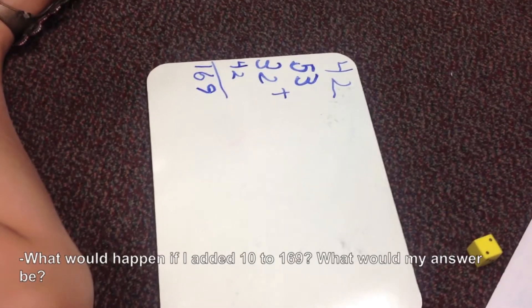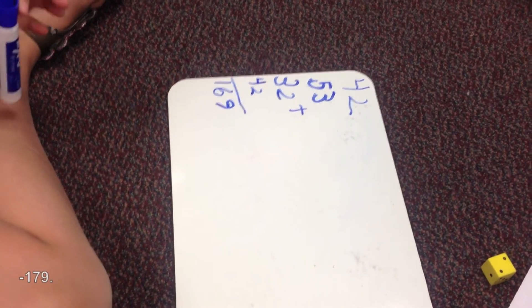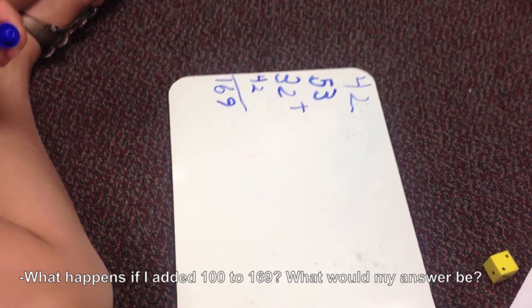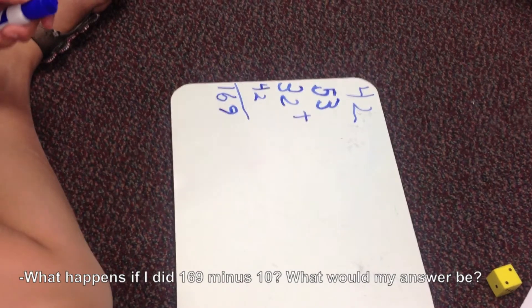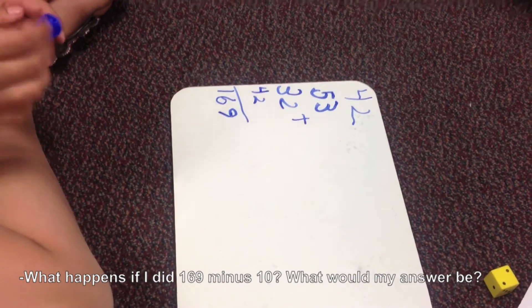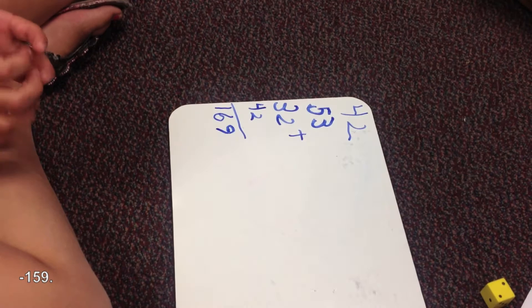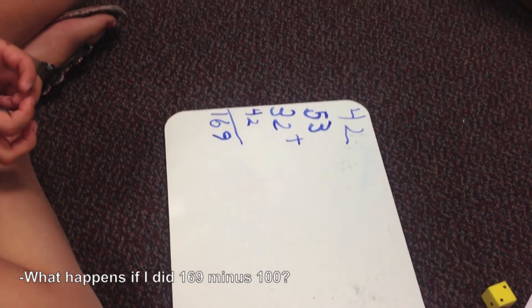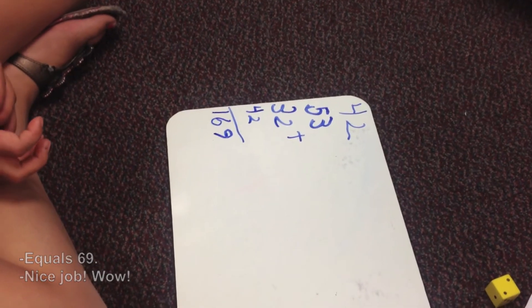What would happen if I added 10 to 169? What would my answer be? 179. What happens if I added 100 to 169? What would my answer be? 269. What happens if I did 169 minus 10? What would my answer be? 169. What happens if I did 169 minus 100? Equals 69. Nice job, wow.